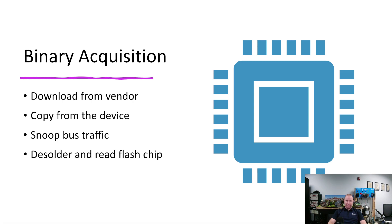You can snoop bus traffic — put a JTAG or a bus pirate on the device to look at traffic flowing between chips and the processor. That's a little challenging since you're observing rather than manipulating the bus. Desoldering or reading the flash chip is often the easiest: when you read off that chip, that is exactly what the system is running — it includes everything. Sometimes this is destructive and may not be an option. Most cases, the easiest is just to download from the vendor and hope the provided file is complete.